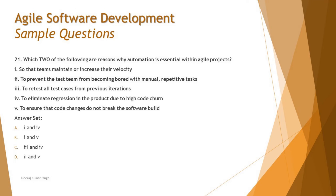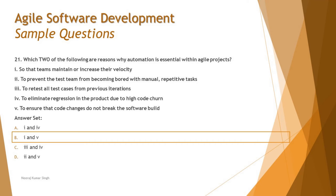Statement five: to ensure that code changes do not break the software. This is a strong reason — automation tools are linked to continuous integration pipelines that execute and highlight instantly if new code breaks the build, as part of a build verification test in a DevOps pipeline. Combining statements one and five, the right answer for question 21 is B: one and five — maintaining team velocity, and ensuring code changes do not break the software.